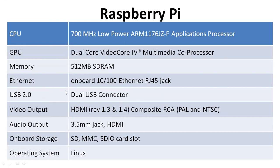The Raspberry Pi also features onboard 10/100 Ethernet with an RJ45 jack, dual USB connectors, HDMI for video output, and a 3.5 mm jack or HDMI for audio output. Onboard storage includes an SD/MMC/SDIO card slot. The operating system used is Linux, and the programming language is Python.